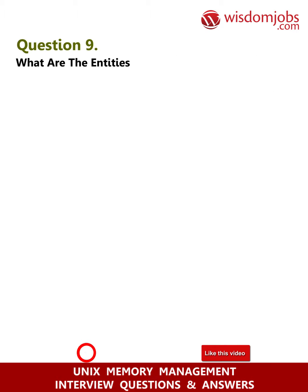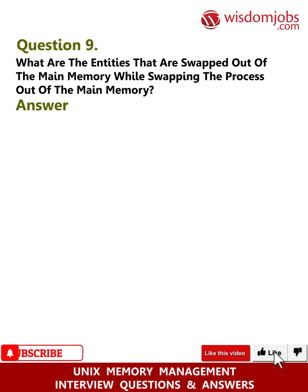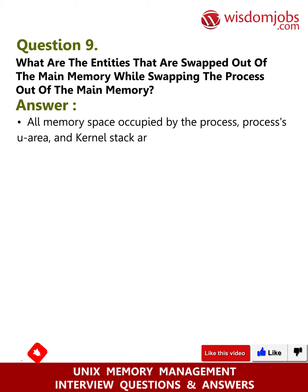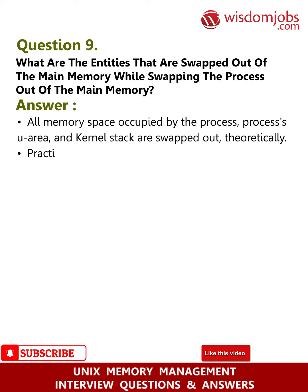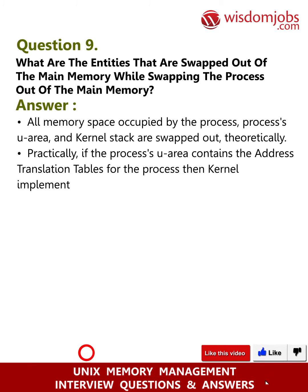Question 9: What are the entities that are swapped out of main memory while swapping a process out? Answer: All memory space occupied by the process, the process's U area, and the kernel stack are swapped out theoretically. Practically, if the process's U area contains the address translation tables for the process, then kernel implementations do not swap out the U area.